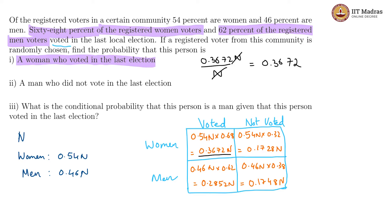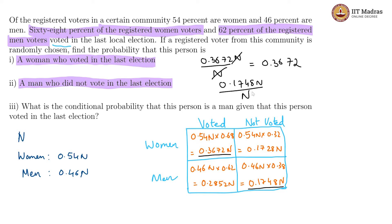The probability that this person is a man who did not vote — for that we are looking at men who did not vote, which is 0.1748n divided by n. n and n cancel, so we have this probability 0.1748.